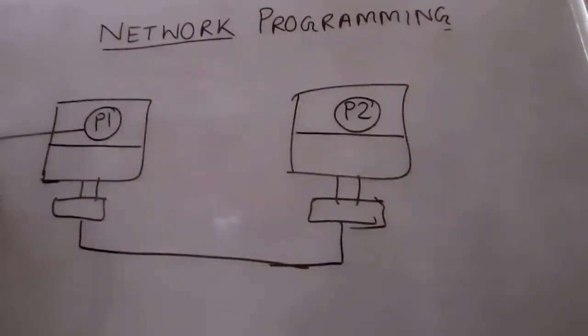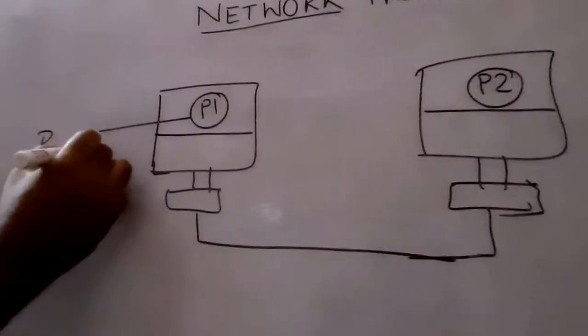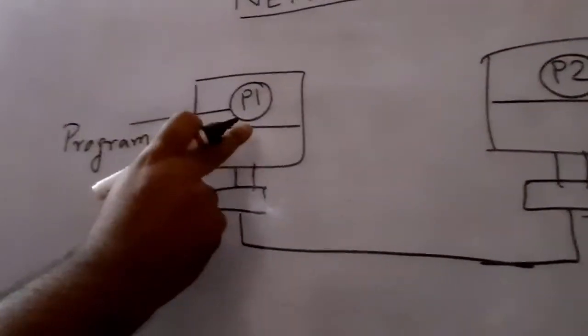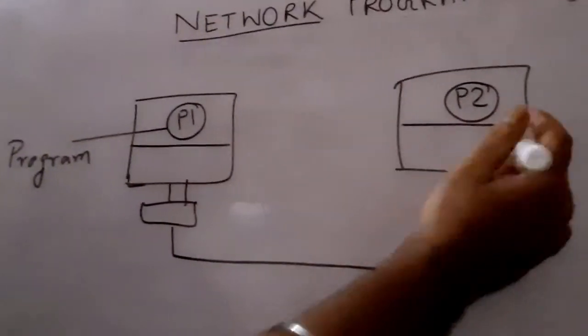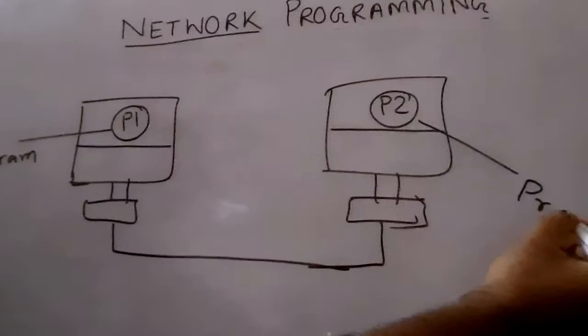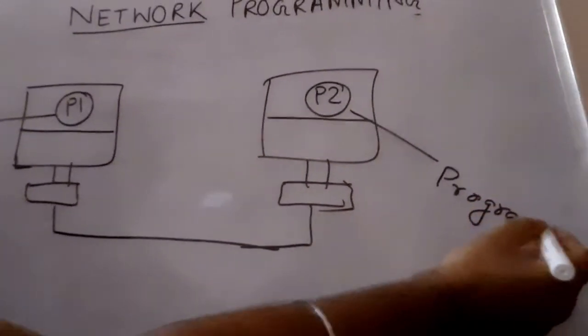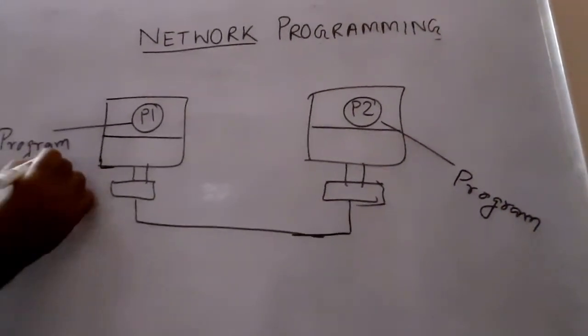We can say one program running in one system and another program running in another system are communicating. In other words, we can say one process communicating with another process.